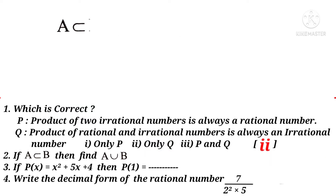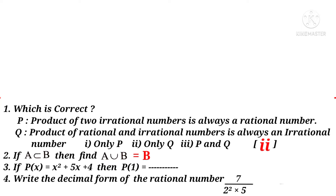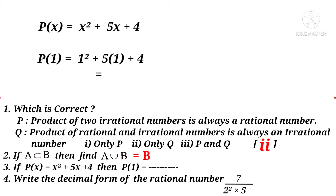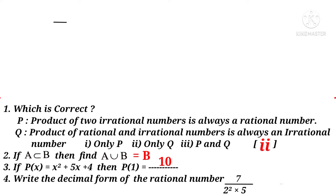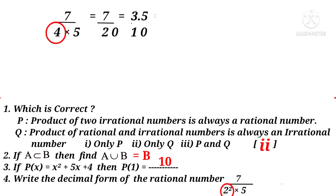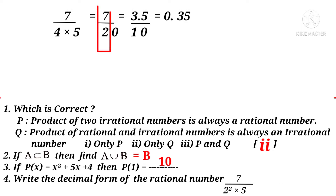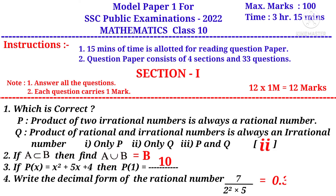Question 2: If A is a subset of B, then A is a small set and B is a big set; the union of two sets always becomes the big set, so A union B equals B. Question 3: If P(x) = x² + 5x + 4, then P(1) = 1² + 5×1 + 4 = 1 + 5 + 4 = 10. Question 4: The decimal form of the rational number 7 / (2² × 5) = 7/20 = 0.35.